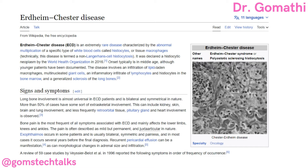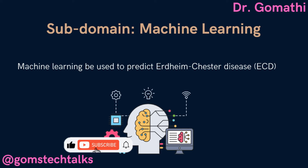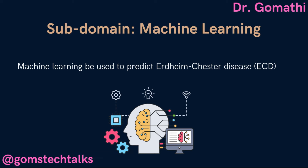What I understood is that we can use machine learning to predict this disease. Early detection and accurate prediction of ECD can improve patient outcomes and inform treatment decisions. My aim is to explore the potential of machine learning to predict ECD. By using advanced machine learning algorithms, we can train models on molecular data, medical imaging and patient data to identify patterns that help predict the progression of ECD. The objective is to develop a reliable and accurate model that can predict disease progression, identify the stage of the disease, and suggest potential treatment options.